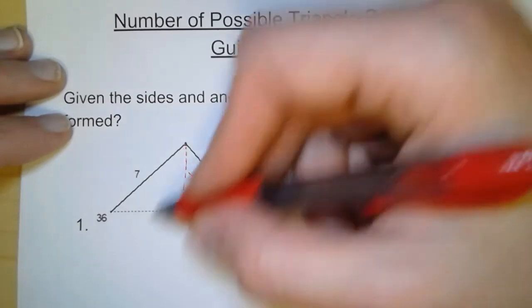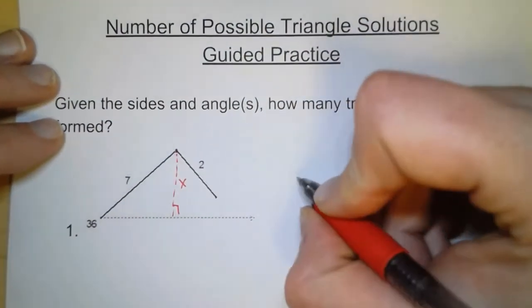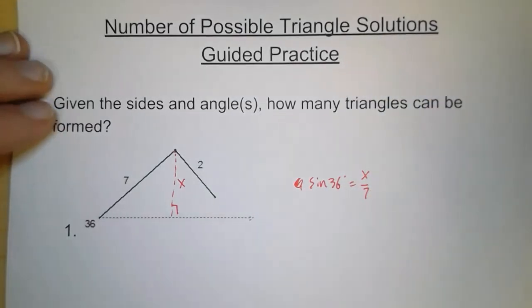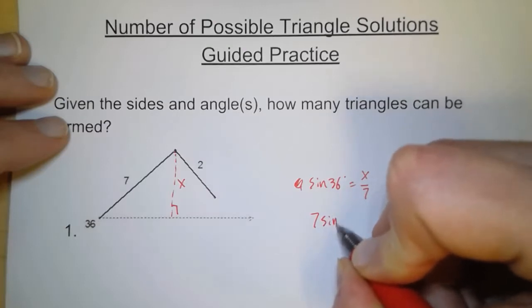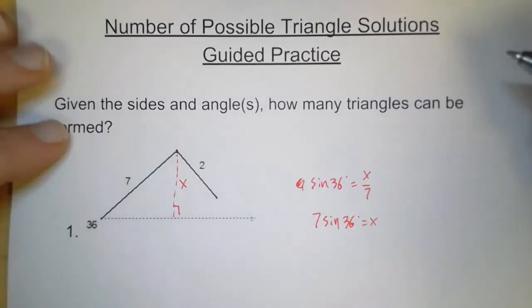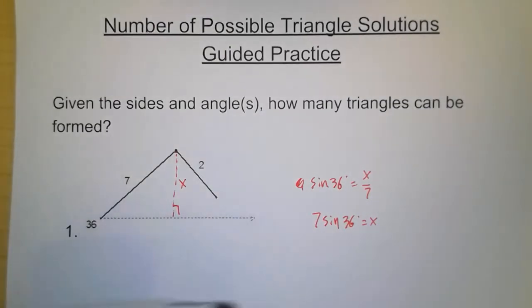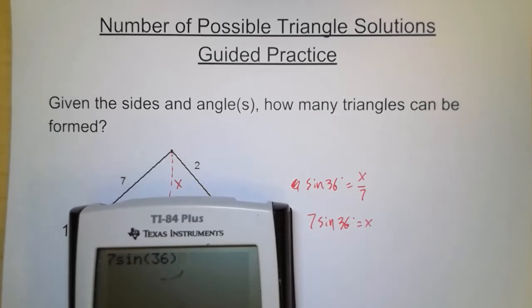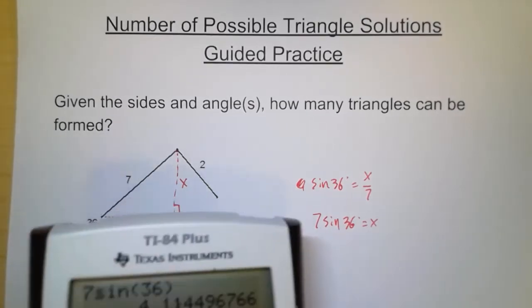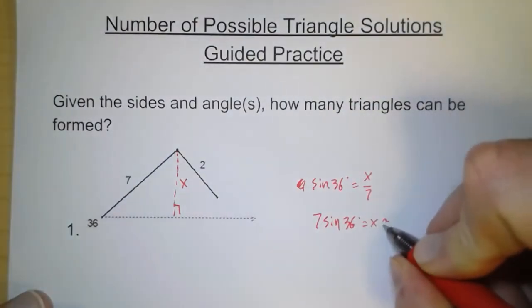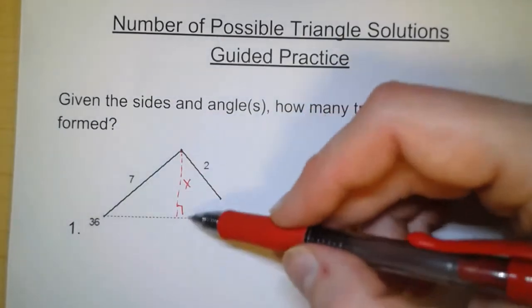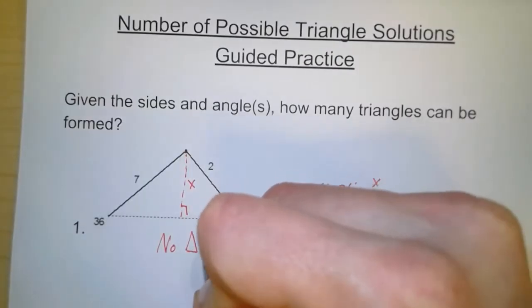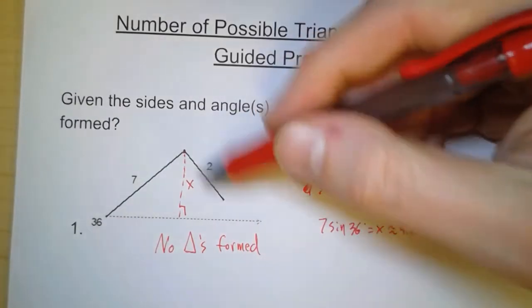Well, we can find that because this makes a right triangle. And so we can use sine of 36 degrees equals x over 7. So whatever x is, it's going to equal 7 sine of 36 degrees. I'm going to need a decimal approximation here because I don't know 7 sine of 36 off the top of my head. Again, I'm in degree mode, so be sure your calculator is in degree mode if you're following along. So x is approximately 4.1 as a decimal. So that is the absolute shortest distance. And so if this side length is 2, then there are no triangles formed.